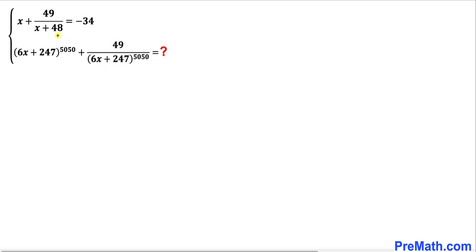Welcome to pre-math. In this video we have got this equation: x plus 49 divided by x plus 48 equals negative 34. And we are going to find the value of 6x plus 247, whole power 5050, plus 49 divided by 6x plus 247 power 5050.